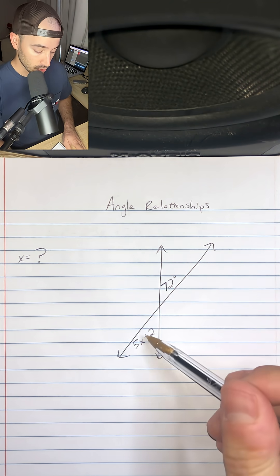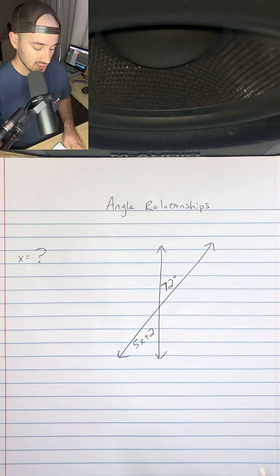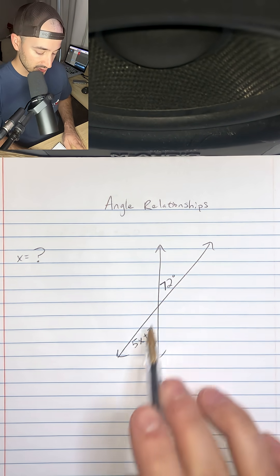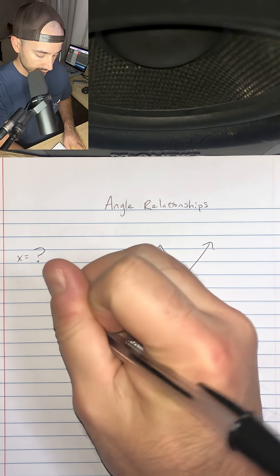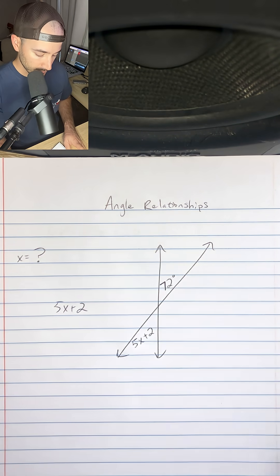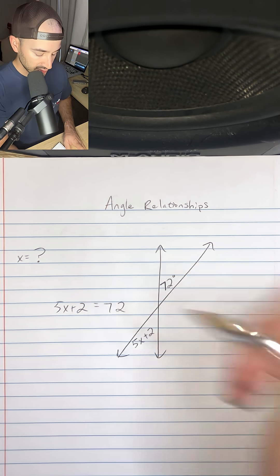So we can use these expressions to just write an equation and then solve for x. If these are equal, we can say that 5x plus 2 has to be equal to 72.